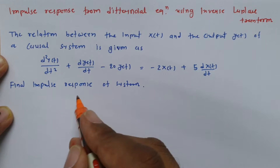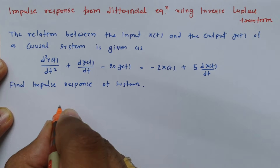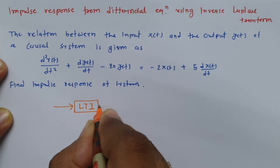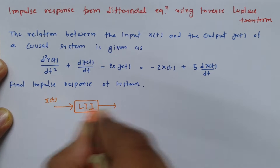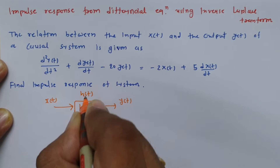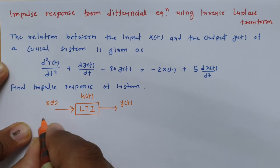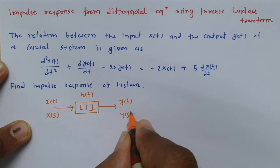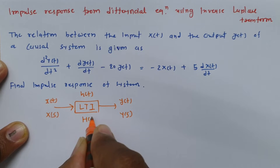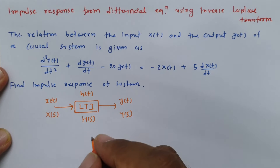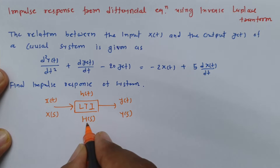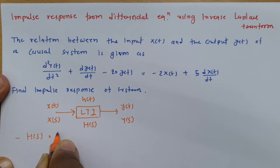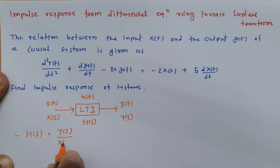Before we calculate the impulse response, we need to understand some basics. If you have any linear time-invariant system with input x(t) and output y(t), the impulse response of the system is h(t). In the Laplace domain, the transform of x(t) is X(s), the transform of y(t) is Y(s), and we define the transfer function H(s) for this LTI system. The transfer function H(s) is the transform of the output Y(s) divided by the transform of the input X(s).